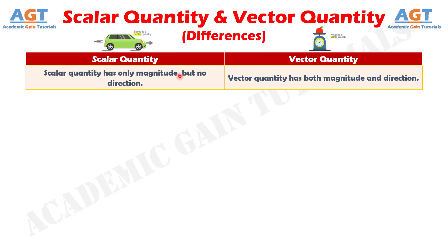Difference number one: scalar quantity has only magnitude but no direction, whereas vector quantity has both magnitude and direction.